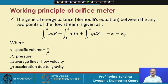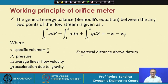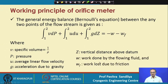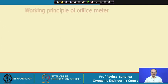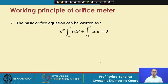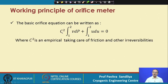Here V is the specific volume (the reciprocal of density), P is the pressure, U is the average linear flow velocity at a given cross section, g is the acceleration due to gravity, Z is the vertical distance from some datum, W is the work done by the flowing fluid, and WF is the work lost due to friction. After writing Bernoulli's equation we rearrange it, neglecting the potential energy — valid when the flow meter is horizontal — and introduce a parameter C which accounts for losses due to turbulence or any other loss.